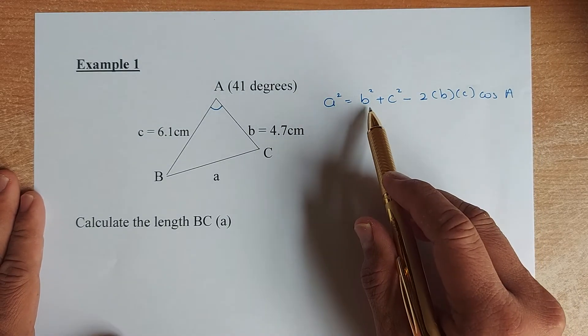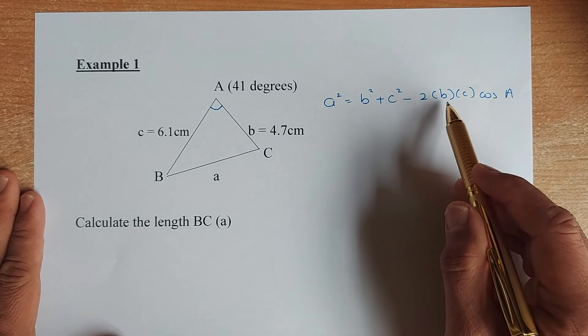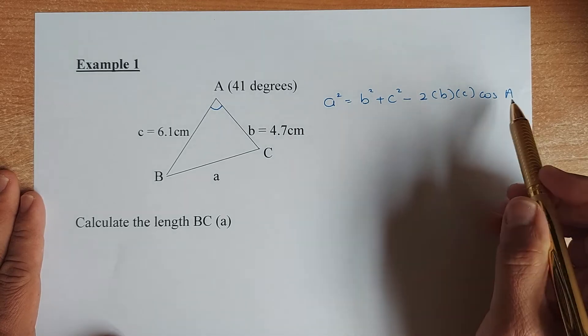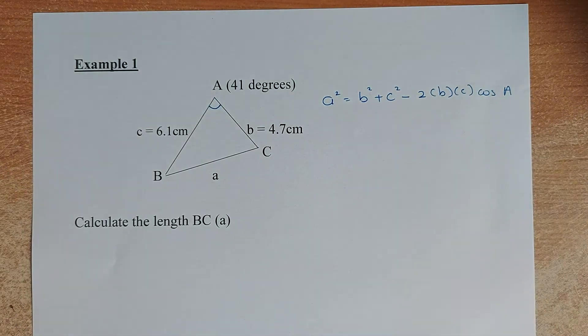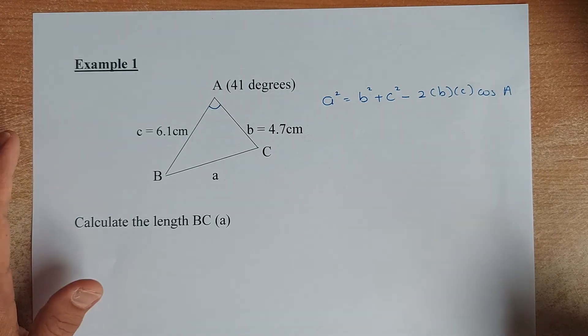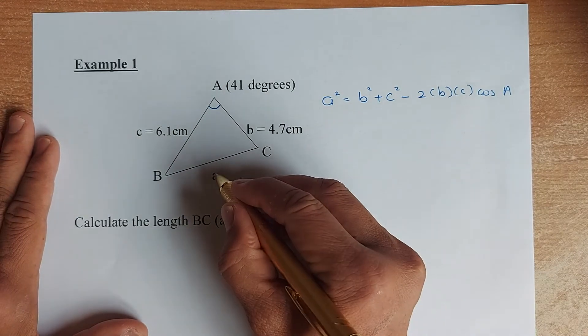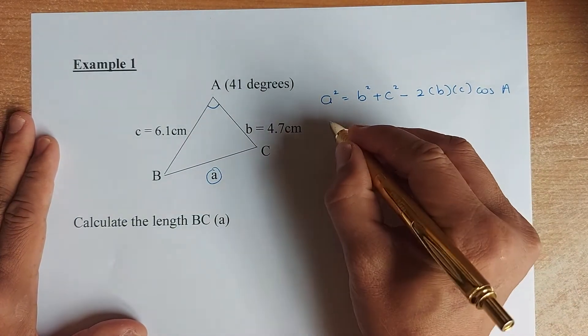So the formula of the cosine rule is given on the right here. a squared equals to b squared plus c squared minus 2 bracket b bracket c cosine A. So now we know all the a, b and c, we are going to substitute. So we are going to find this length here, the a squared.